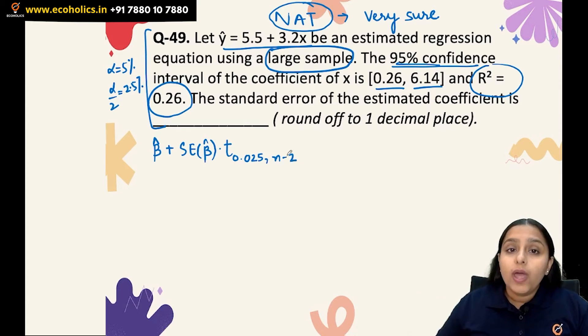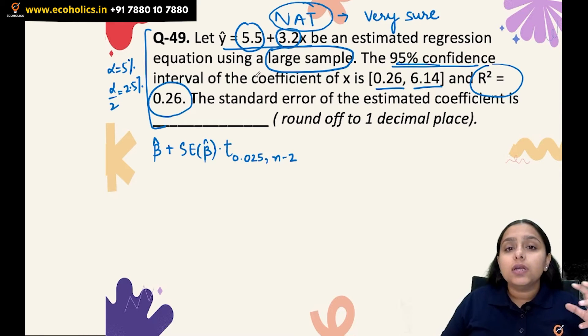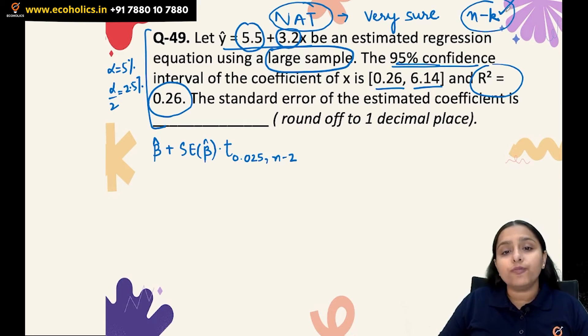Why have I written n minus 2? Because the degrees of freedom here will be n minus 2, as we just have two parameters here. Whenever we work with the t-test statistic, we need to find the degrees of freedom which are given by n minus k. Here k is the number of parameters which is two.